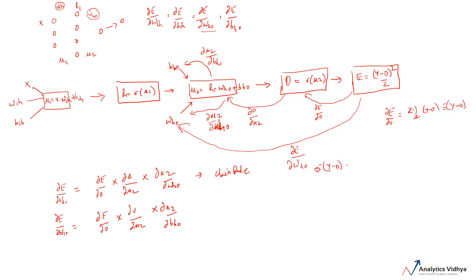Next is ∂O/∂U2. Since O is a sigmoid function of U2, we need the derivative of the sigmoid. The derivative of sigmoid(x) is sigmoid(x) times (1 minus sigmoid(x)). So ∂O/∂U2 equals sigma(U2) times (1 minus sigma(U2)). But since sigma(U2) is just O, we can rewrite this as O times (1 minus O) — the predicted value times 1 minus the predicted value.